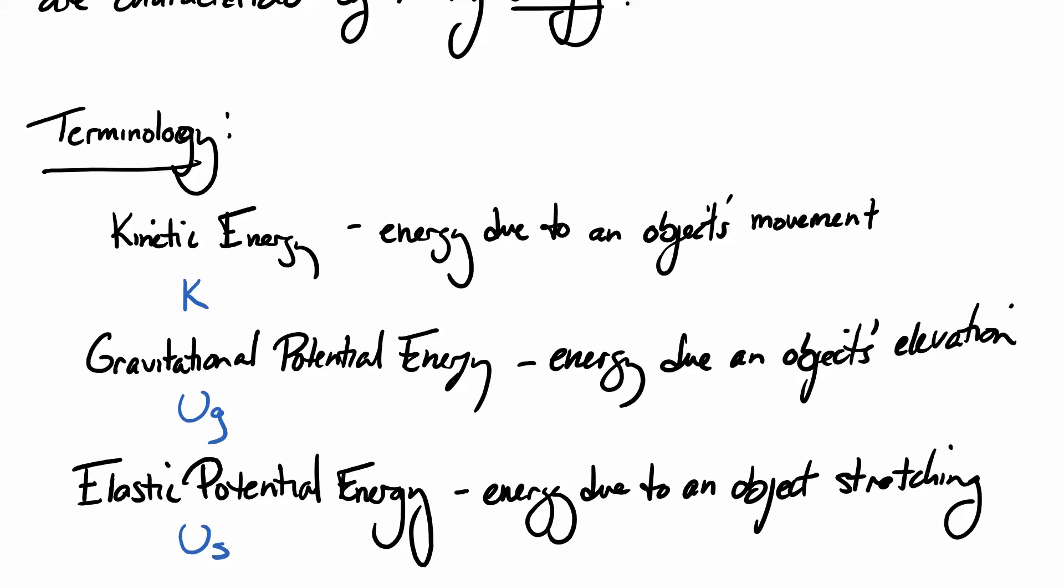So kinetic energy, this energy is due to an object's movement inside of our system. Gravitational potential, due to an object's elevation inside of our system. And elastic potential, due to an object stretching, or the stretching of some object inside of our system.